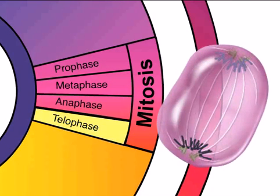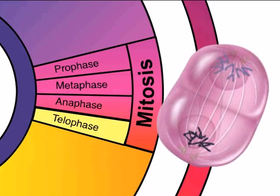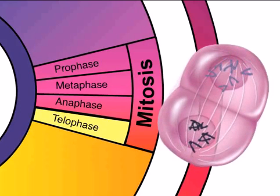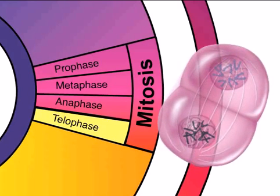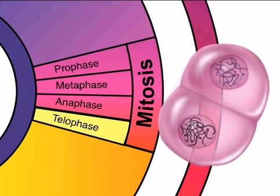In telophase, a nuclear membrane forms around a group of 46 chromosomes. The spindle fibers disappear and the chromosomes uncoil.